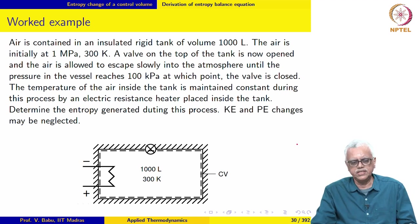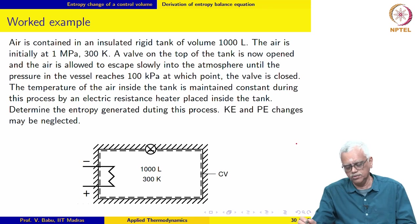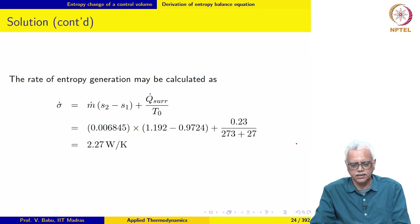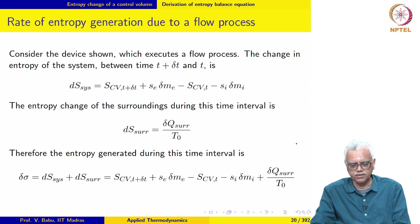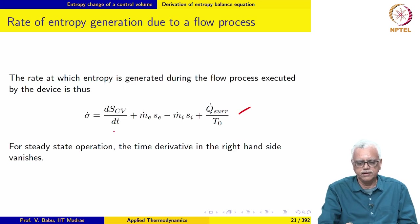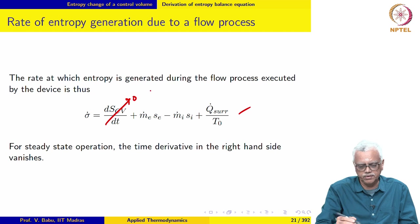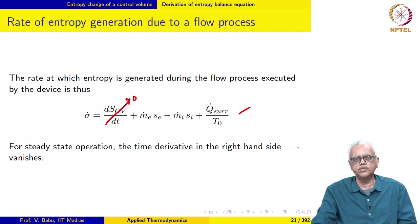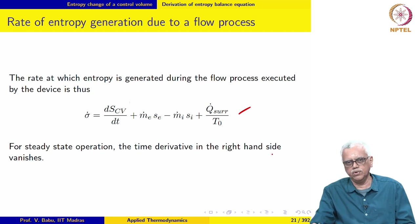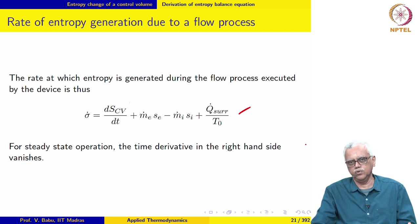All the examples so far have been steady flow situations, so we were able to set dS_cv/dt equal to zero. Going back to the entropy balance equation we derived, we set dS_cv/dt equal to zero for all steady flow examples. What we are going to do now is look at a couple of examples involving unsteady flow situations.